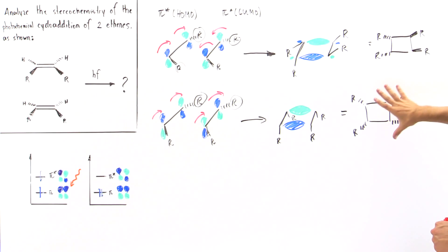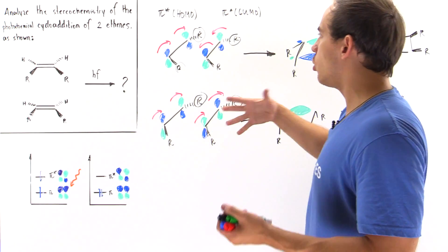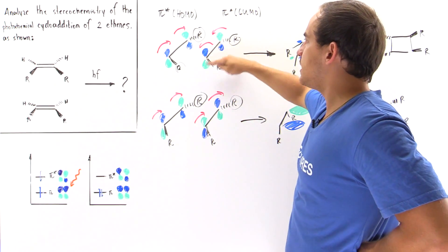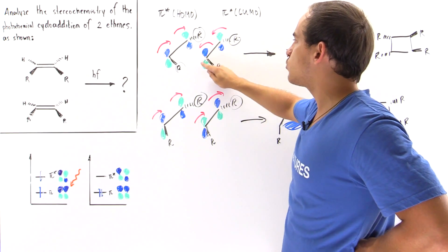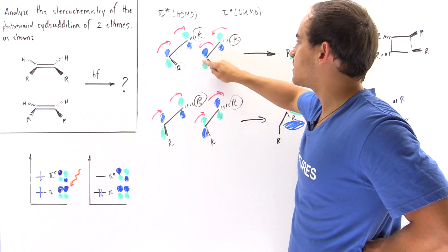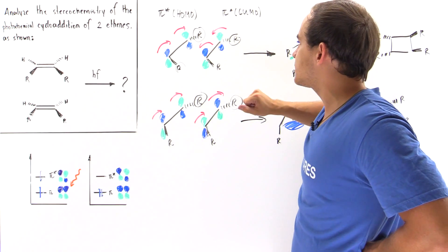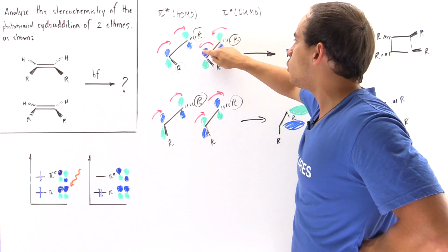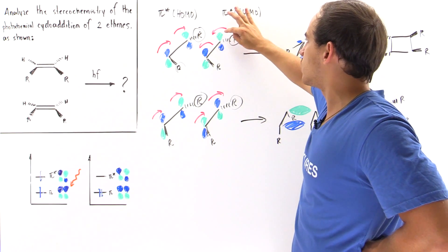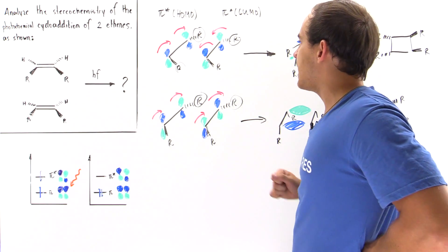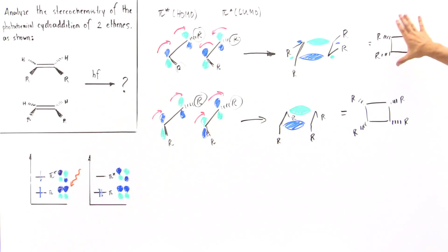So the second type of molecule — a different one — has all R groups pointing in the same exact direction. To go from the first product to the second, all we did was switch the sides of the lobes. An electron can be found in either lobe, so switching from negative (blue) to positive (green) doesn't affect the orientation of the groups. We switched this one from blue to green, and green to blue, and the same on the other molecule. If we switch them back, we simply return to the first result and produce the same first molecule.